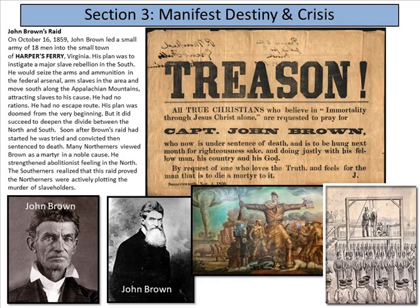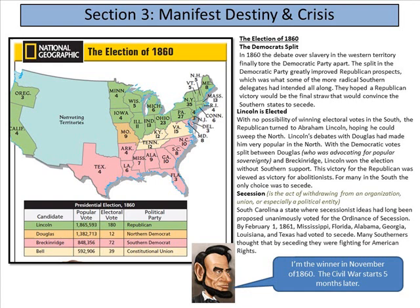Here we get to the election where Republican Abraham Lincoln wins. The Democrats split in 1860 — the debate over slavery in the Western territory finally tore the Democratic Party apart. The split greatly improved Republicans' prospects, which was what some more radical Southern delegates had intended all along. They hoped a Republican victory would convince the Southern states to secede — they wanted out. Lincoln won the 1860 election. With no possibility of winning electoral votes in the South, Republicans turned to Lincoln, hoping he could sweep the North. Lincoln's debates with Douglas had made him very popular, with Democratic votes split between Douglas advocating for popular sovereignty — states' rights — making the Lincoln-Douglas debates famous, now even a piece of competitive debate.